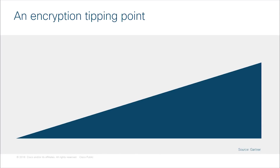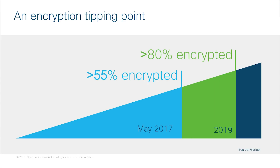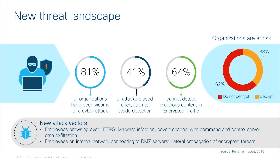Encrypted traffic is on the rise. As of 2017, more than half of web traffic is encrypted and is expected to keep growing at a rapid rate. And that's a good thing, as it provides organizations with data protection and privacy. But at the same time, we are seeing attackers exploiting new attack vectors by using HTTPS traffic to hide malware and evade detection.